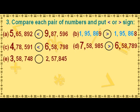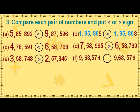The digit 3 in the lakhs place value in the first number is greater than the digit 2 in the lakhs place value in the second number. Hence, the first number is greater, so we put the greater than sign. The first five digits 9, 6, 8, 5 and 7 have the same place value in both numbers. The digit 4 in the ones place value of the first number is less than 8 in the ones place value of the second number. Hence, the first number is smaller, so we put the less than sign.